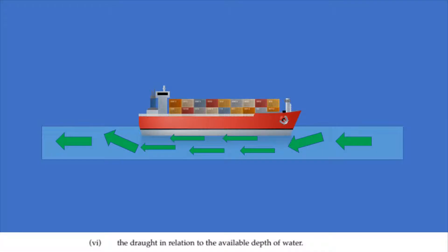Sixth consideration: the draft, in relation to the available depth of water. Here, we're really referring to squat on larger vessels. Squat effect is the hydrodynamic phenomenon by which a vessel moving quickly through shallow water creates an area of lower pressure that causes the ship to be closer to the seabed than would otherwise be expected. This can cause accidental groundings, for example.